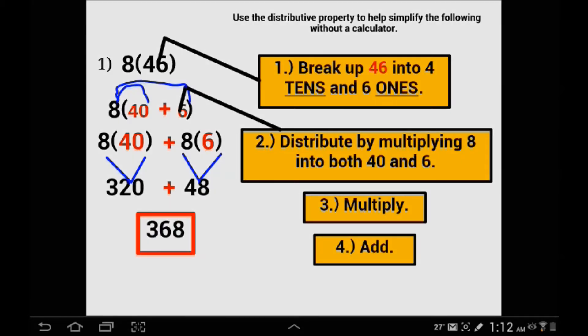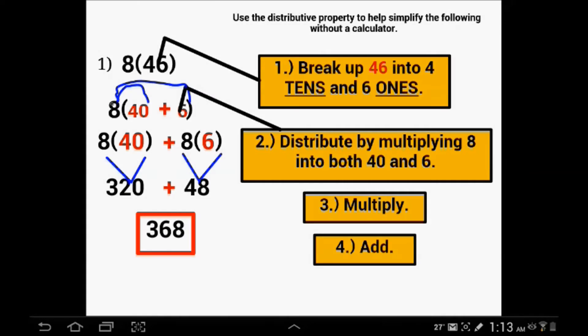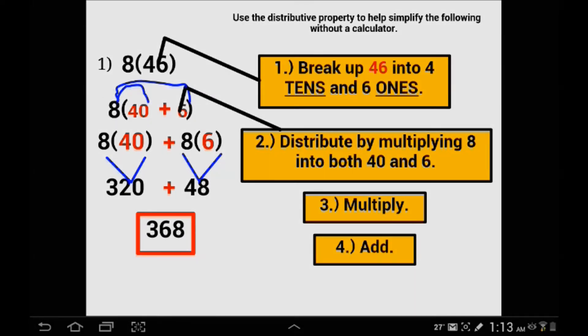To recap what we just did, we took the number 46 and broke it up into 40 plus 6. Then we distributed the 8, multiplying and sticking a plus sign between our products. 8 times 40 gave us 320, 8 times 6 gave us 48, and adding that up gives us 368.